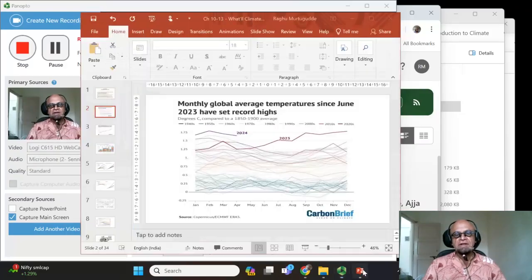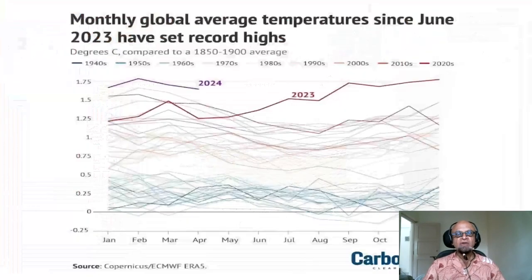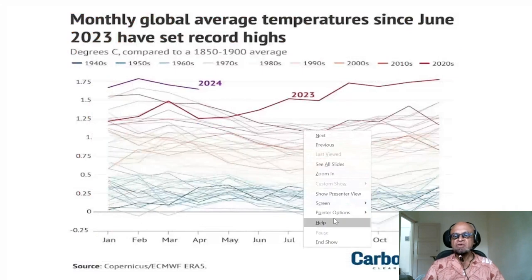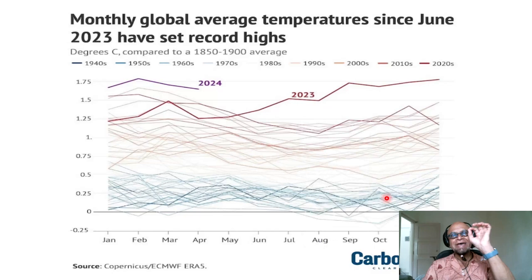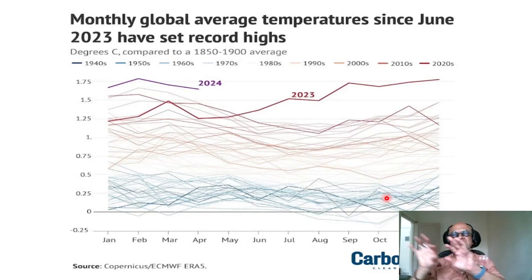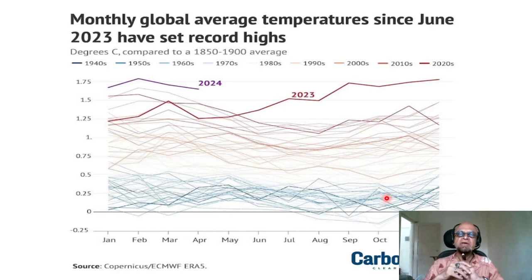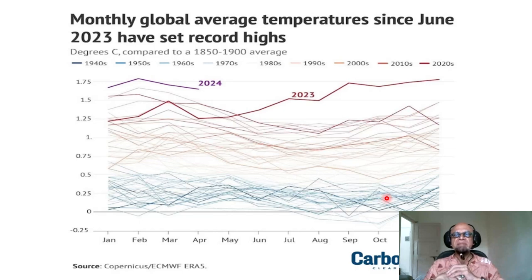We need to understand what we mean by a climate scenario. Why do we need scenarios? Because when you want to say what could happen in the future, you need scenarios of what population will do, what technology will do, and how intelligent we will be in reducing our impact on the planet and reducing our greenhouse gas emissions.